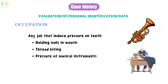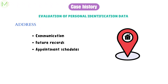Next, we record occupation. Any job that induces pressure on teeth can cause malocclusion, such as holding nails in the mouth, thread biting, and pressure from musical instruments. Recording the address is needed to communicate and record for future purposes. Also, by knowing the distance a patient travels for appointments, the number of appointments can be reduced accordingly.